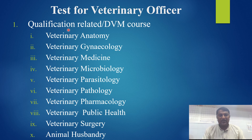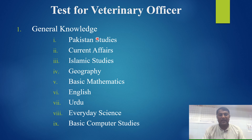The qualification-related or DVM course-related disciplines are: veterinary anatomy, gynecology, medicine, microbiology, parasitology, pathology, pharmacology, public health, surgery, and animal husbandry. The general knowledge portion consists of the following topics: Pakistan studies, current affairs, Islamic studies, geography, basic mathematics, English, Urdu, everyday science, and basic computer studies.